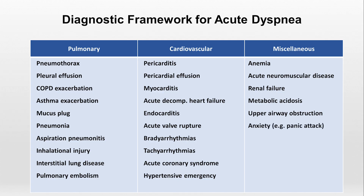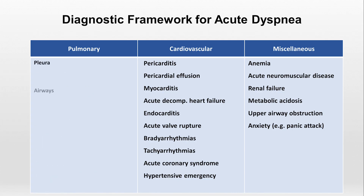So this is a basic example of a diagnostic framework — a categorized list of etiologies for a particular symptom. However, we can add another level of categorization by subdividing the major systems into functional components. Consider what are the basic constituents of the lungs: you have the pleura, the airways, the alveoli, the interstitium, and the vessels.